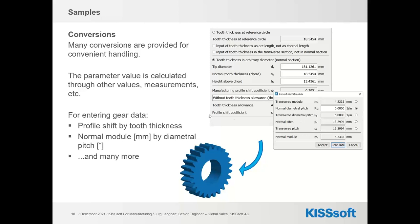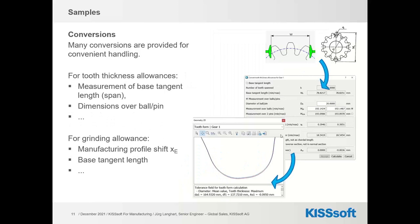Some samples are given for conversions. One typical sample may be that a profile shift is not available as a number but you have various types of tooth thickness data given — this is a possible conversion you can do in KISSoft. Or for entering the manufacturing profile shift, you can go via the tooth thickness values from the gears, and the software will then recalculate the tooth thickness allowances and then also the manufactured root diameter.